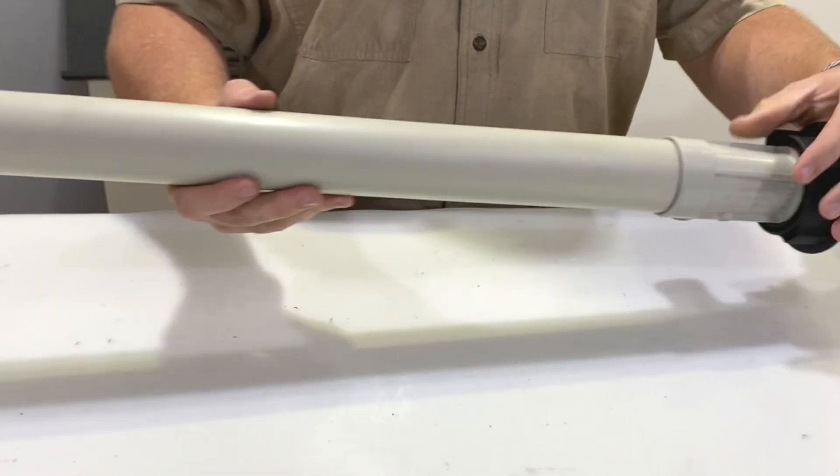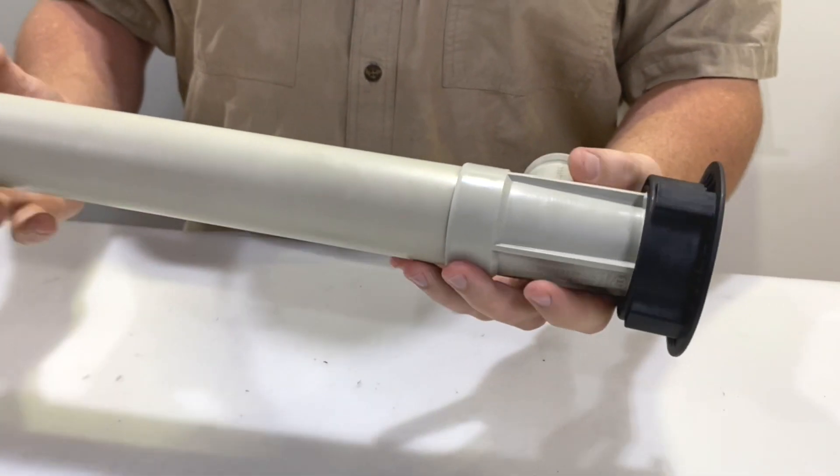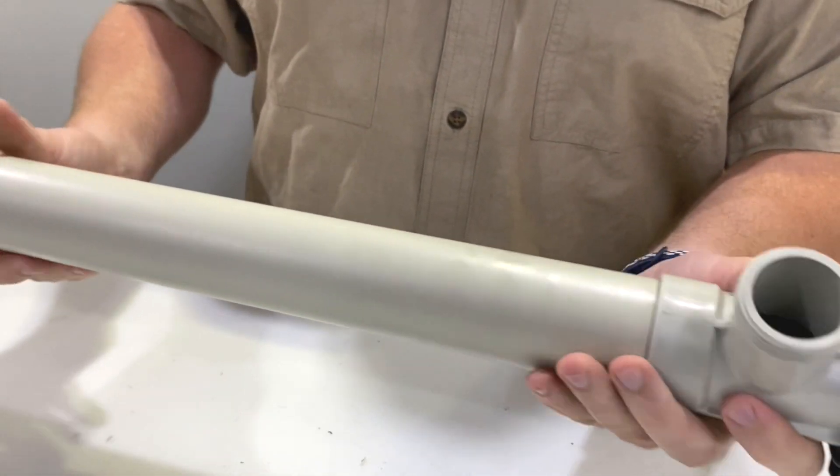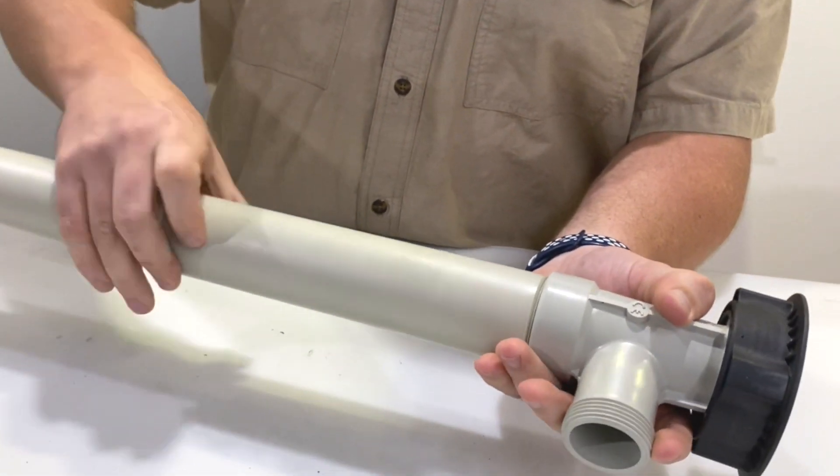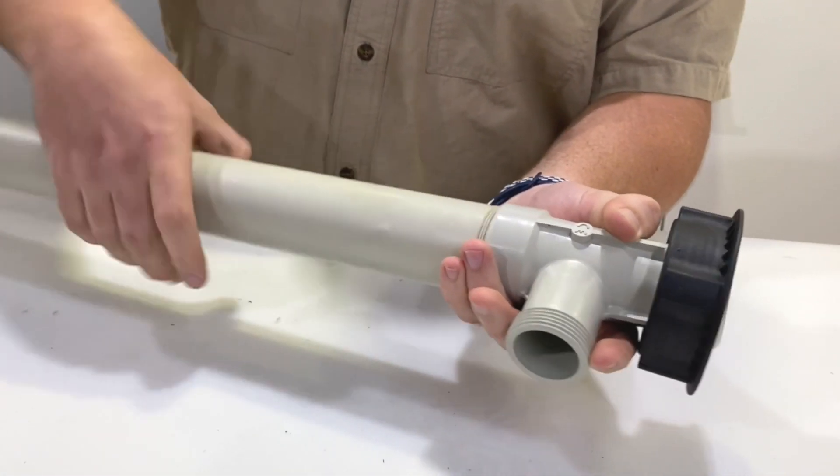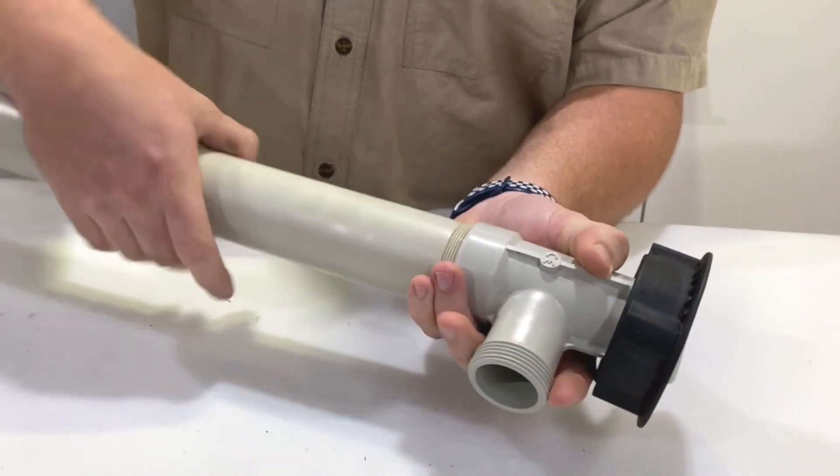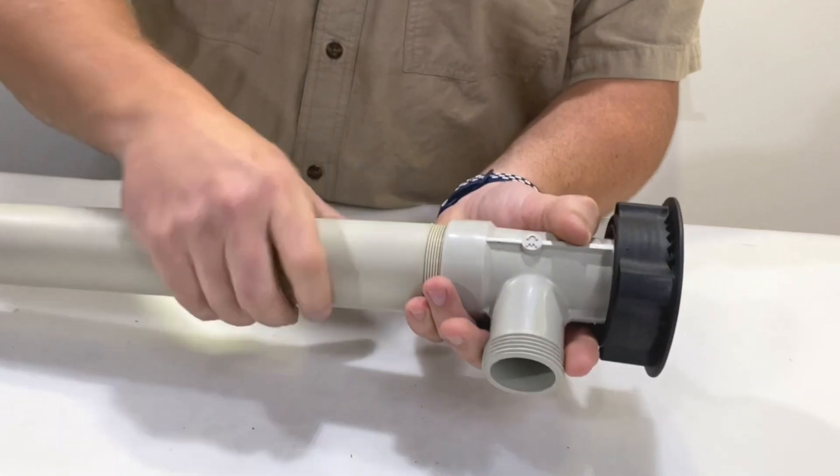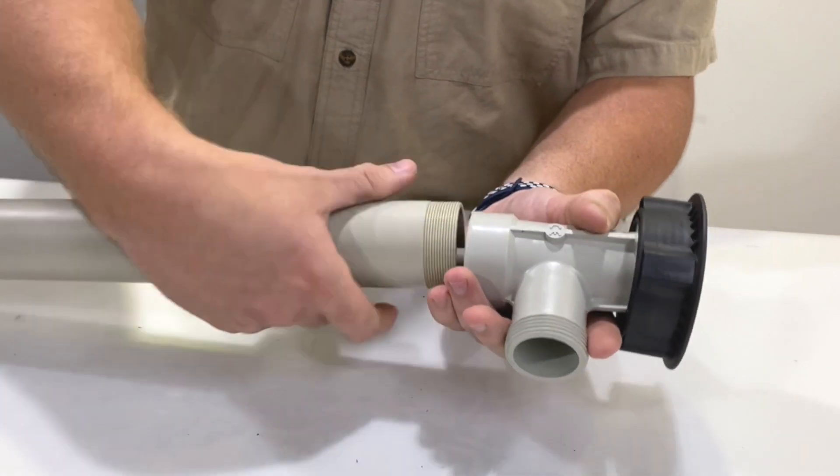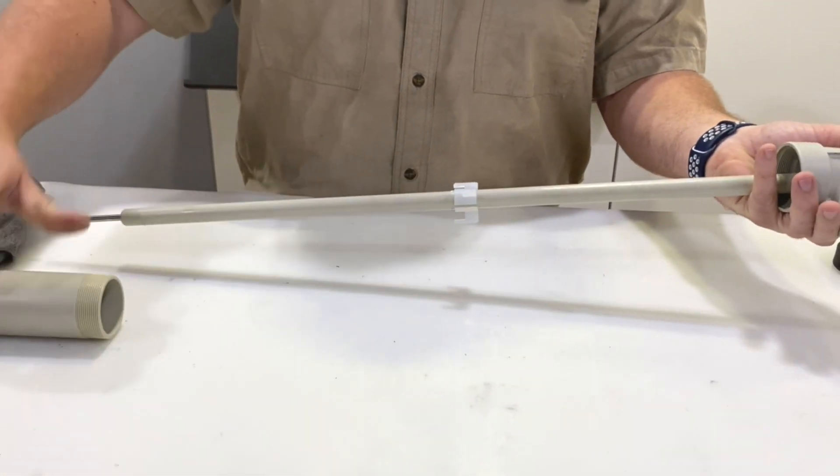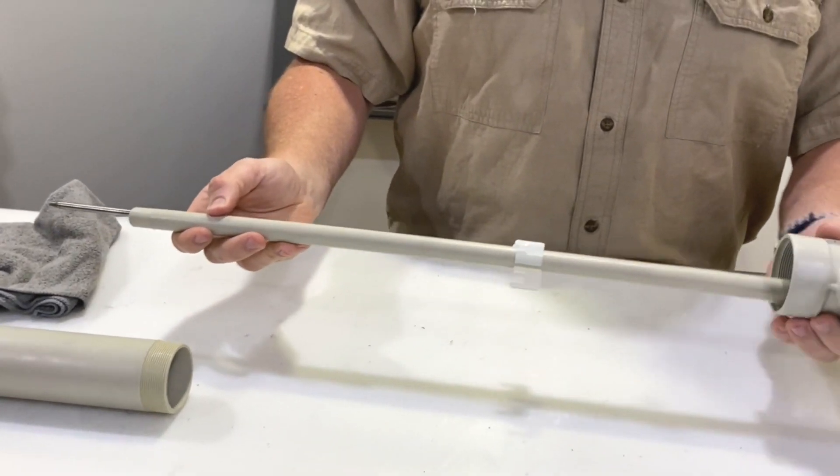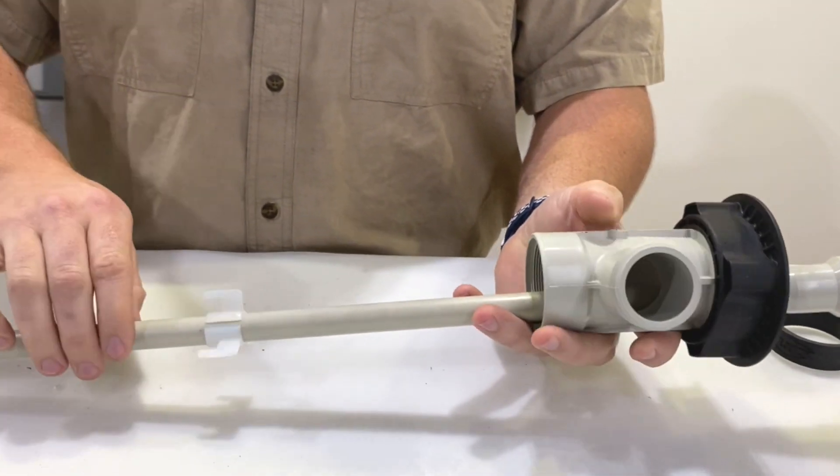And then the pump tube, unscrew from the T piece, also reverse thread. And then you can slide the tube off.